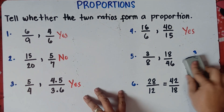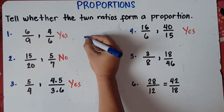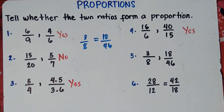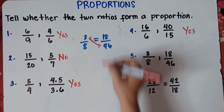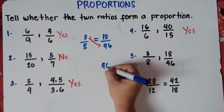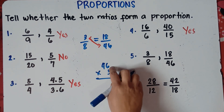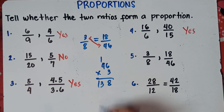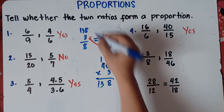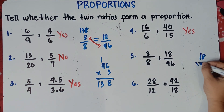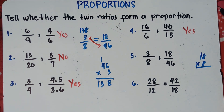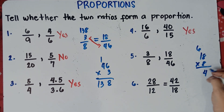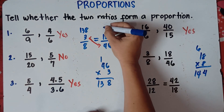Let's try number 5: 3/8 = 18/46. Cross multiplication: 3 times 46 — 3 times 6 is 18, carry 1; 3 times 4 is 12, plus 1 is 13 — so 138. And 18 times 8 — 8 times 8 is 64, carry 6; 8 times 1 is 8, plus 6 is 14 — so 144.